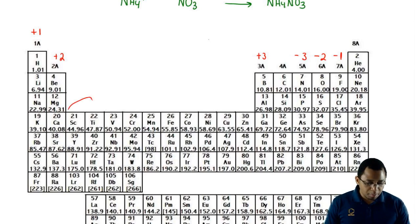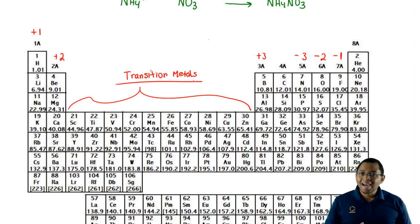Our transition metals here in the pit, our transition metals have variable charges, meaning they have more than one charge. We're going to learn how to name them based on the type of transition metal we have later on when it comes to nomenclature.